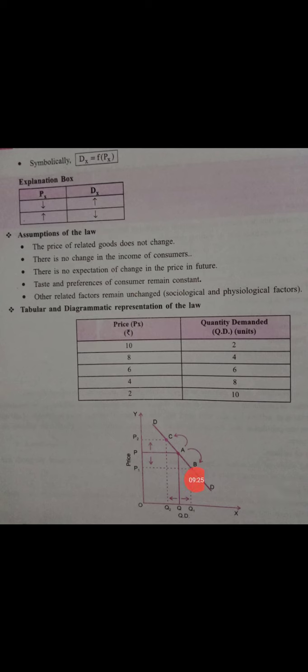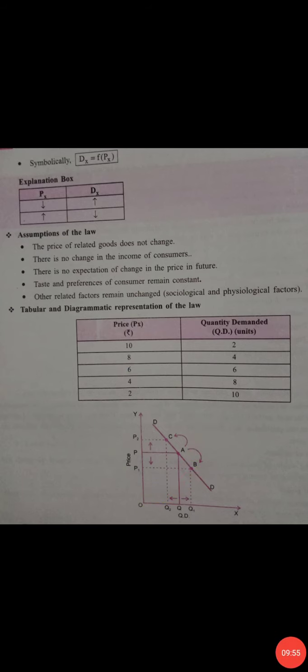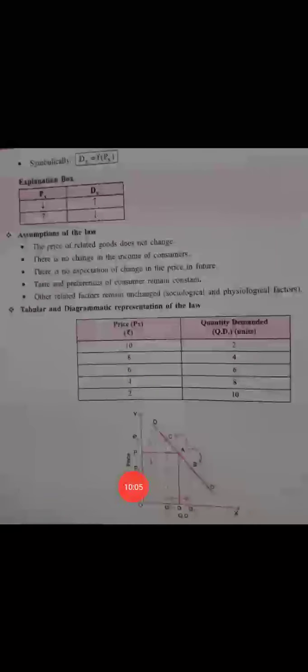Looking at the diagram: if first the price is OP and we are purchasing OQ quantity of goods, then as price increases from P to P2, the quantity demanded automatically decreases. And if price decreases, quantity demanded automatically increases. This relation tells us there is a negative relation between quantity demanded and price — which is why the slope of the demand curve is negatively sloped downward.